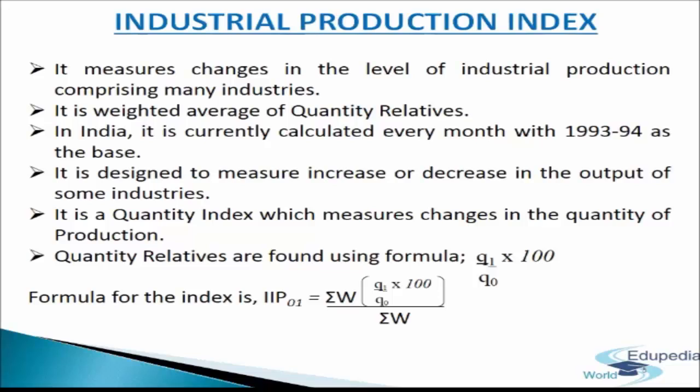Generally, data of industrial production are collected under the following heads: Mining industries — coal, iron ore, copper, aluminium, petroleum, etc. Metallurgical industries — iron and steel, rolling mills, etc.